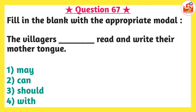Next question: fill in the blank with the appropriate modal. 'The villagers blank space read and write their mother tongue.' Options are: option one, may; option two, can; option three, should; option four, with. Here we need to fill in a modal verb. 'May' means perhaps, 'can' means they are able to, and 'should' means they ought to. The correct answer is option two — 'can' — meaning the villagers are able to read and write in their mother tongue.